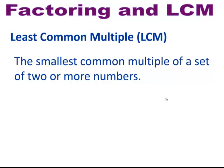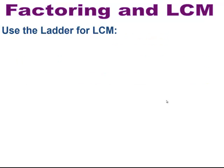We're going to be using prime numbers to find our least common multiple. The least common multiple is the smallest common multiple of a set of 2 or more numbers. When you're asked to find the least common multiple of 2 or more numbers, we're going to be using something called the ladder method, which uses prime factoring.